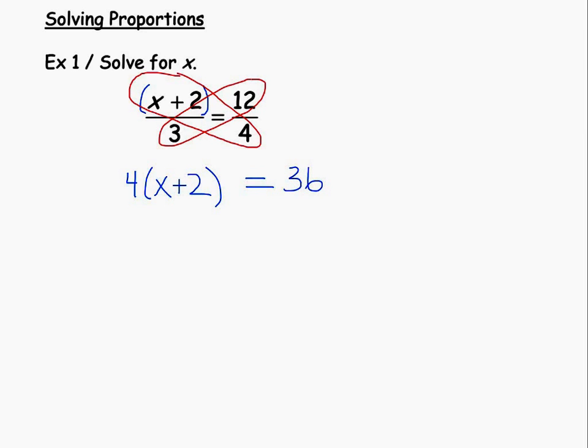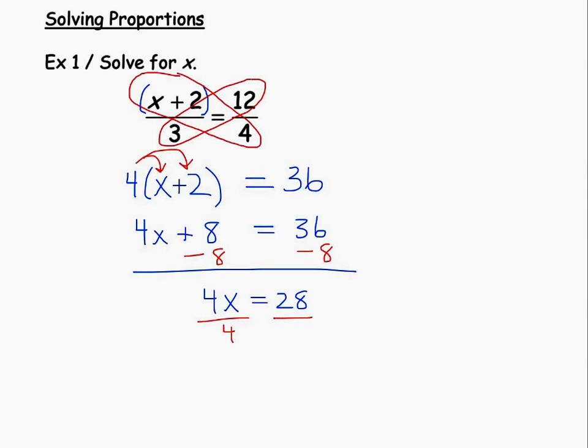Now in terms of solving here, we can distribute the 4 on the left-hand side. And we'll get 4x, and 4 times 2 would be 8. And that would be equal to 36. We'll subtract 8 on each side, and that will get us 4x equals 28. And just divide by 4 on each side here, and we'll find that x would have a value of 7.